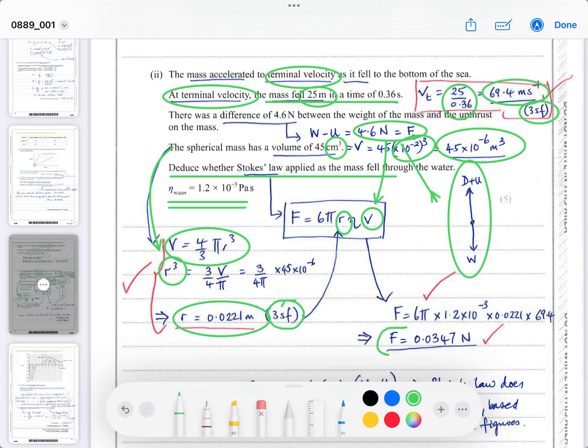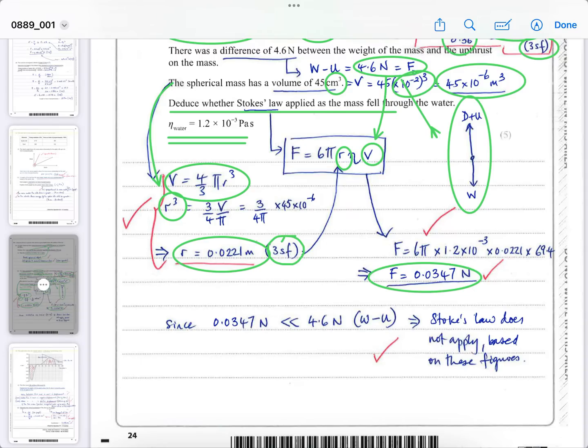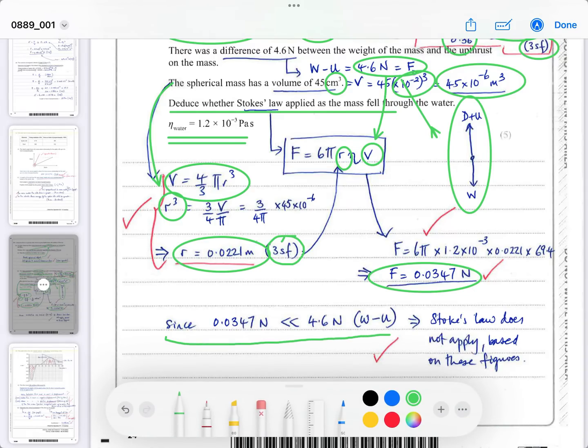We can work out what the force is according to the data provided to enter into this equation. Once you do that, you find that the force you calculate is tiny. We put all the numbers in, and we find that it's a fraction of a newton, 0.0347 newtons to three significant figures. Well, that's way less than the 4.6 newtons that would create a balanced situation according to our force diagram. So you've got to say, since the calculated value is much less than the difference between the weight and the upthrust, which was given as 4.6 newtons, since it's much less, Stokes' law appears not to apply, does not apply, based on these figures. That's all you can say. You have to relate it back to whether Stokes' law, in your understanding, will apply as this spherical mass fell through the water.